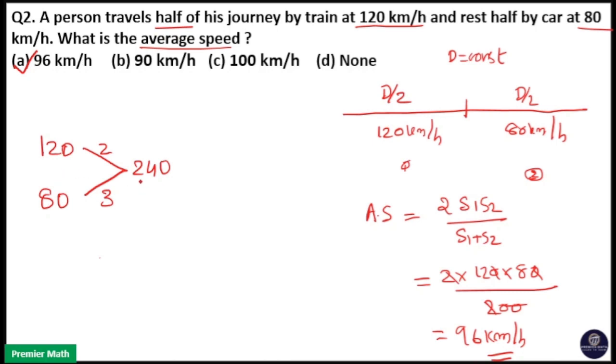That means to cover 240 km distance at 120 km per hour, train takes 2 hour time. Same way to cover 240 km distance at 80 km per hour, train takes 3 hour time.